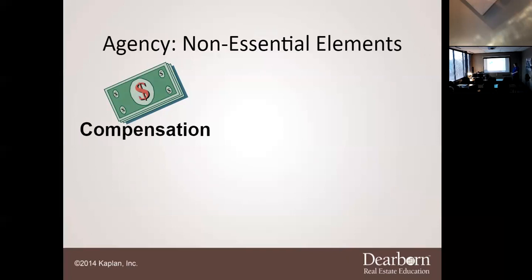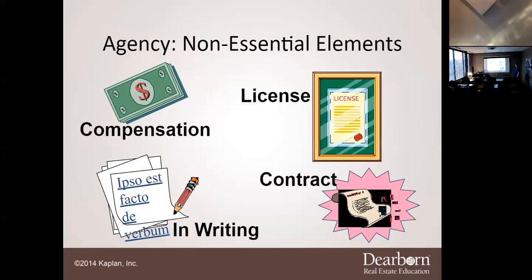Some non-essential elements of agency include a license, compensation, being in writing, and a contract. Number one — the person representing must have the legal right to do so. You wouldn't hire an attorney that hasn't passed the bar. Compensation is needed in some form, though it's not always required. It also needs to be in writing, and there needs to be some form of contract.